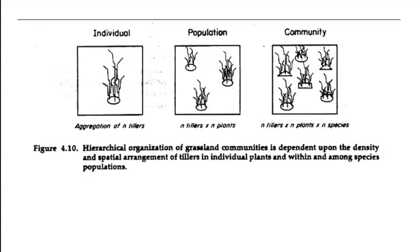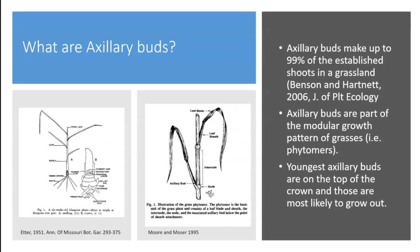To put these in context with population ecology: when you look at and measure a grassland community, you see all these different species — but really that community is a collection of populations of different species. The idea with population ecology is we can understand something happening at the population level, get an idea of why communities are changing. Further, populations are made up of individuals — usually stems for rhizomatous plants — and at the base of those individuals are axillary buds, which are very important in our grasslands.